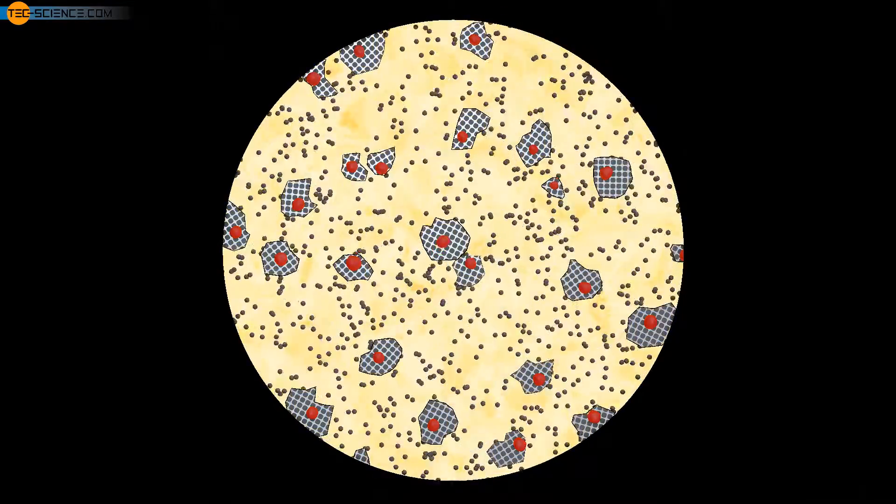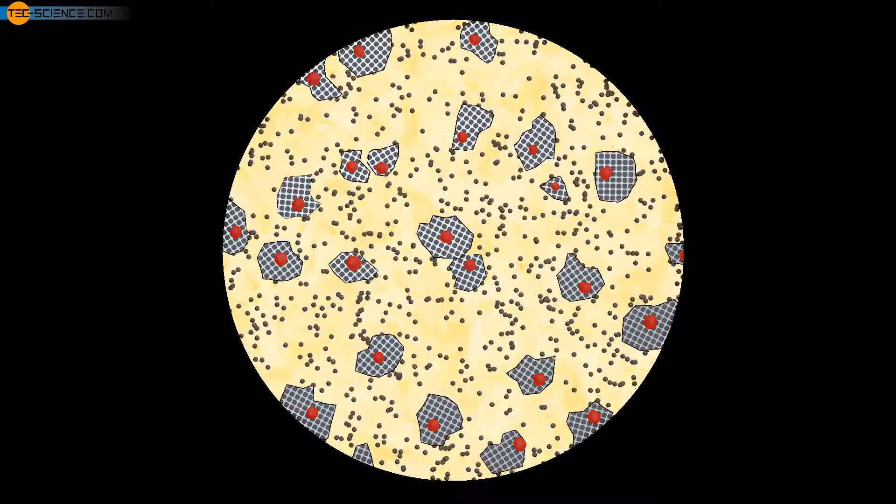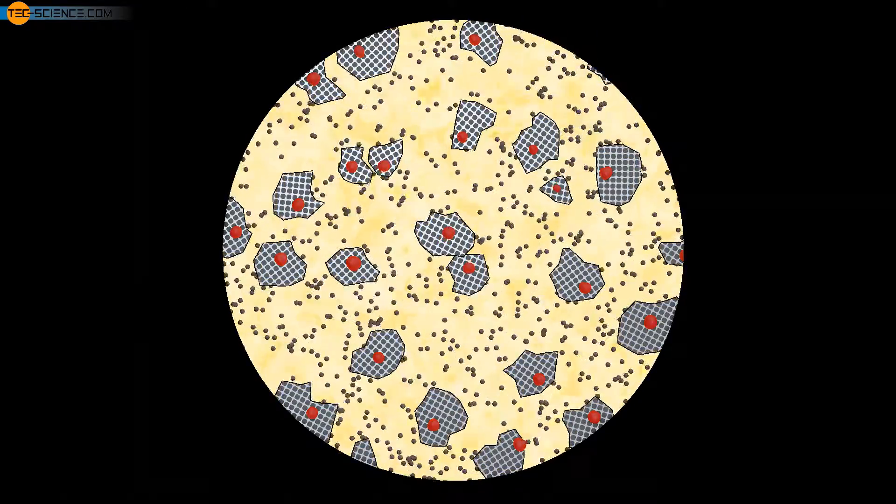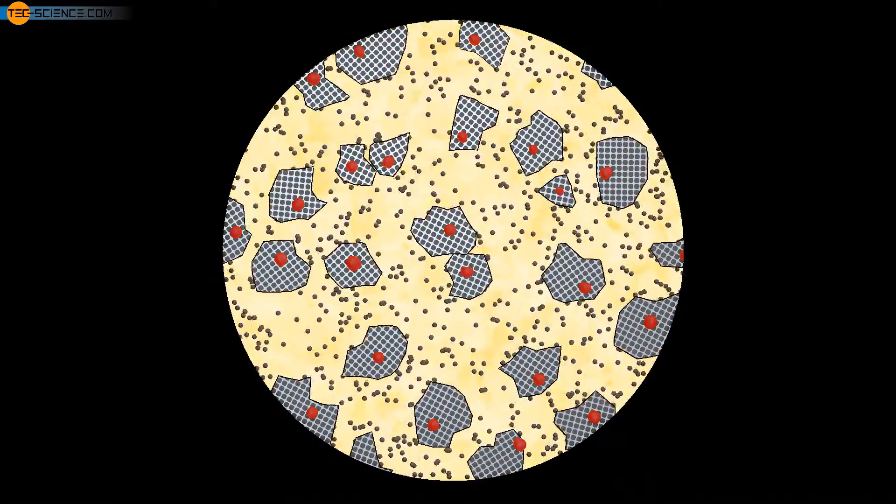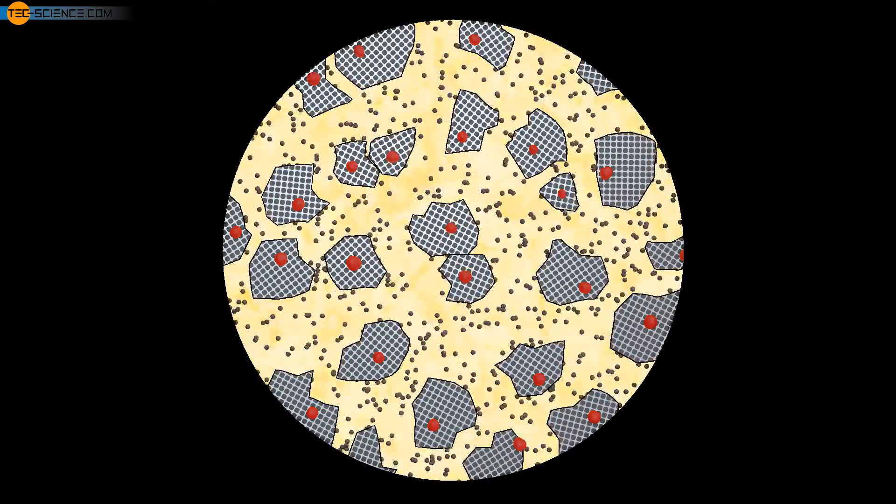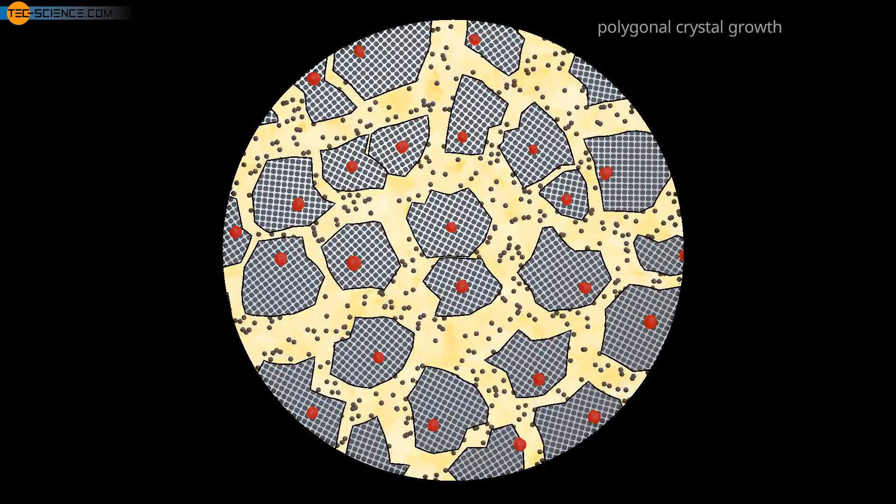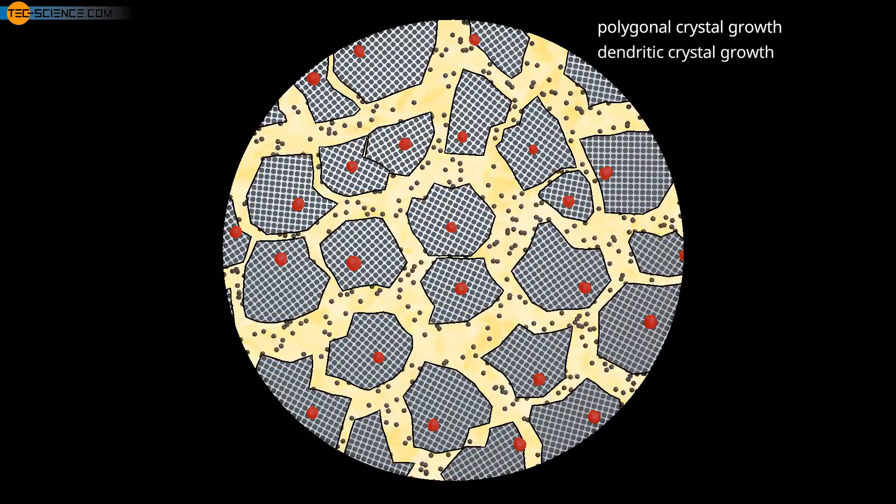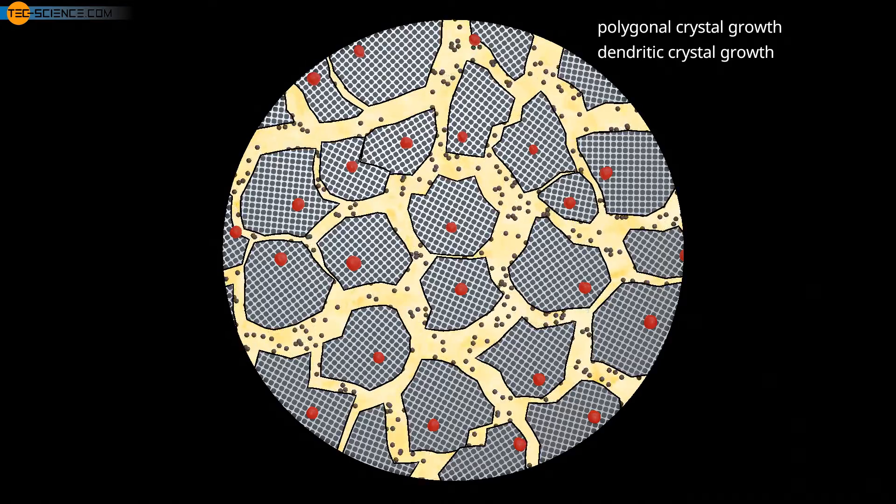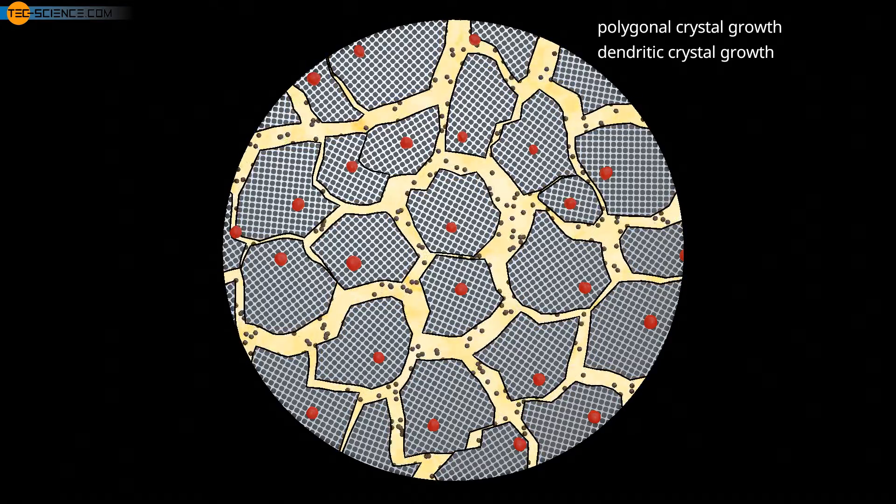Decisive for the shape of the growing crystal is the direction of heat dissipation at the solidification front. Depending on whether the heat of crystallization is dissipated through the solidified crystal or through the adjacent melt, a distinction is made between polygonal crystal growth and dendritic crystal growth. These types will be discussed in more detail in the following.